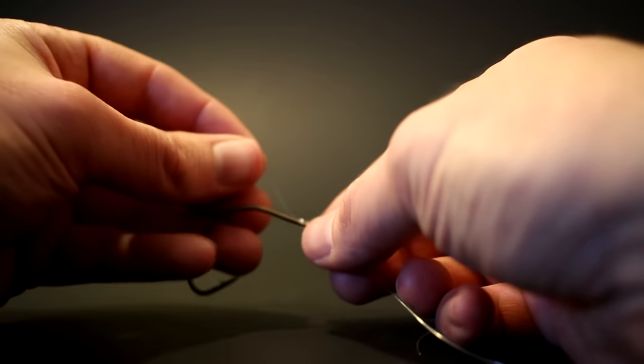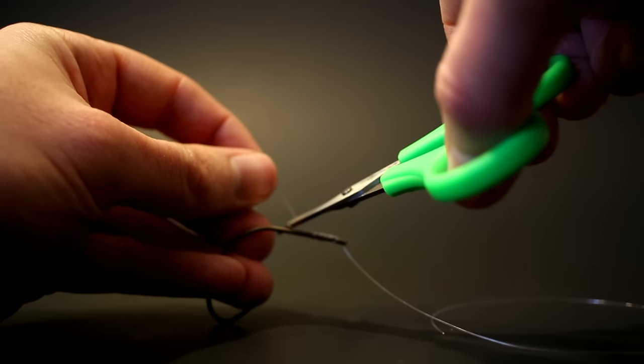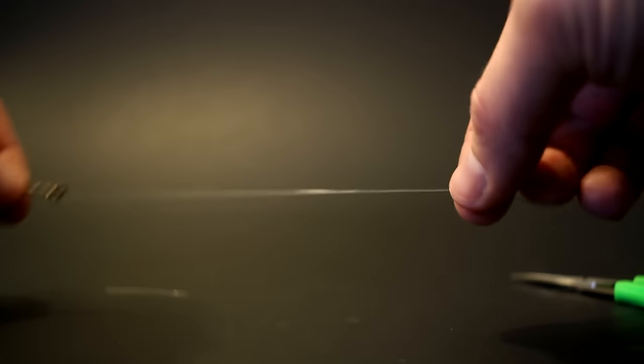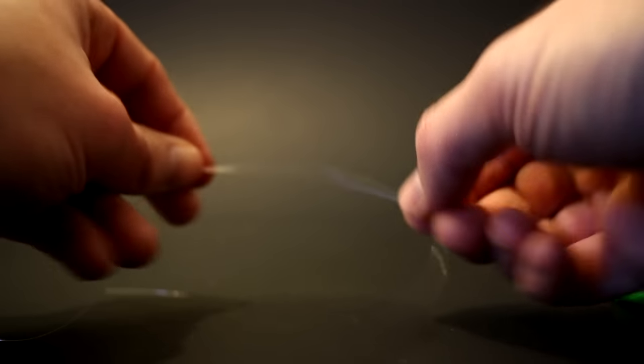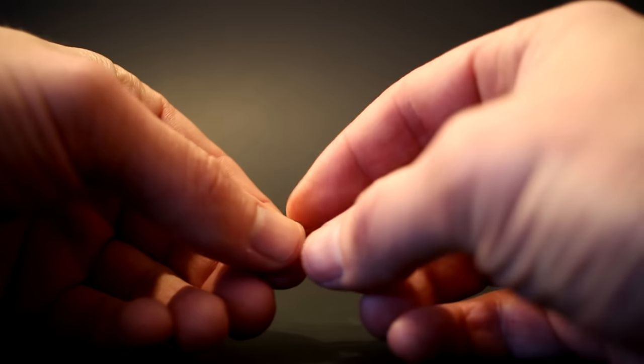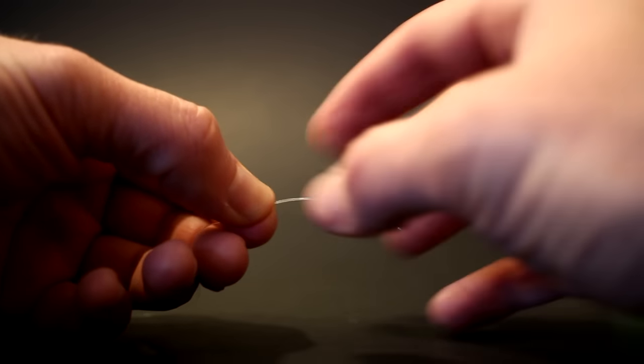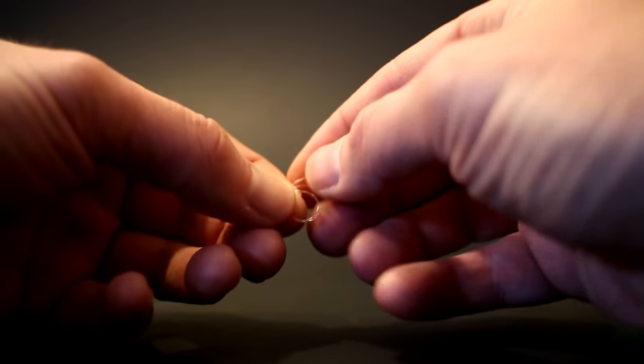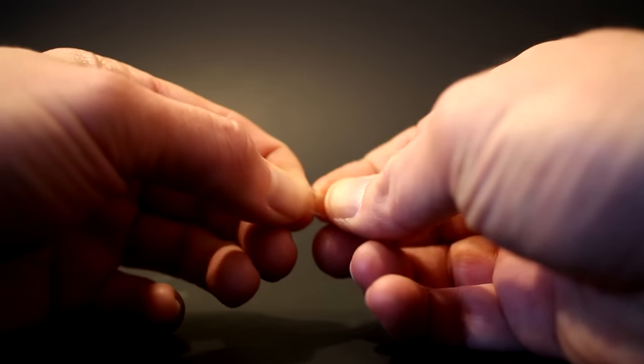So all we have to do now simply cut off the tag there and I'm just going to do an overhand loop on the end. You can do a figure eight loop or whichever loop you want to do. Figure eight is preferred. Overhand will work just as well. That's all I'm going to do right here.